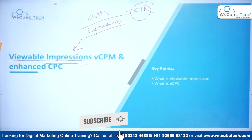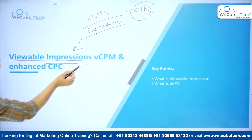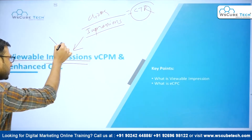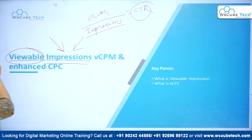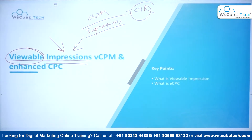In this particular video we are going to talk about a very special term called viewable impressions. We know about impressions, but when the term 'viewable' is added in front of impression it becomes a little complicated. In most bidding scenarios you will see that your campaign is running on viewable impressions, or you have the option to select viewable impressions. We will talk about what viewable impressions are and how they are calculated and counted.